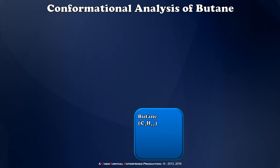Now let's take a look at butane, which is a hydrocarbon with the molecular formula C4H10. Butane has four carbons in a linear chain, so naturally there are three different carbon-carbon bonds along which I could site for my conformational analysis. I'm choosing to do my conformational analysis along the central bond, or the C2-C3 axis, because it's going to give me the most interesting result. Siting along this axis, notice that each carbon will have two hydrogen and one methyl substituent.